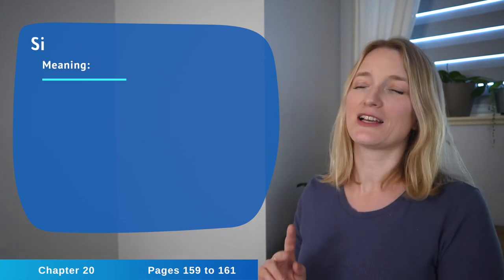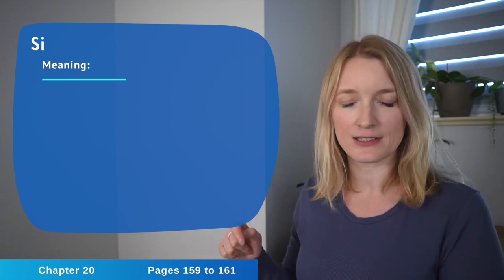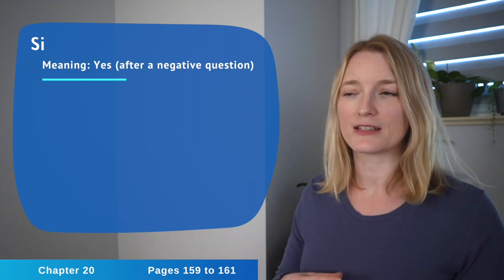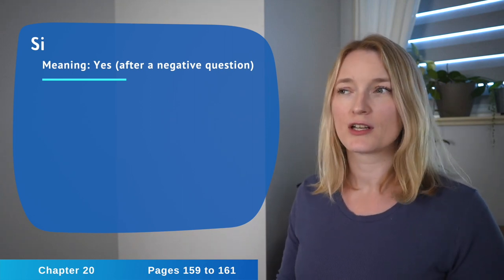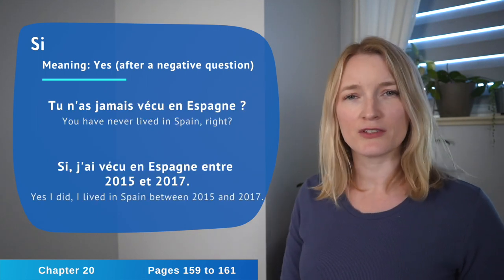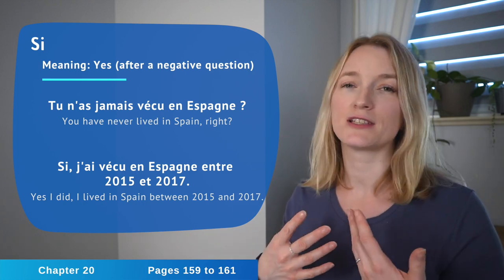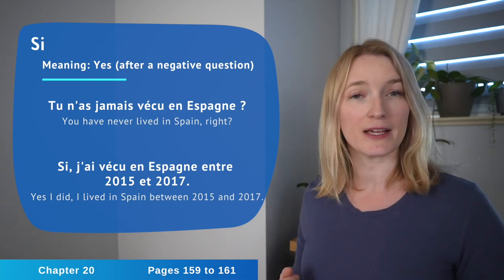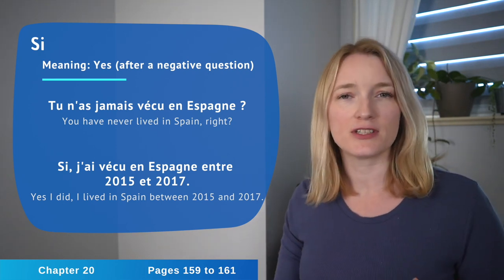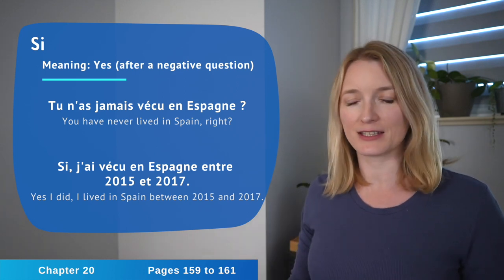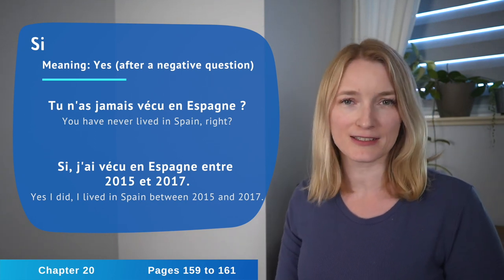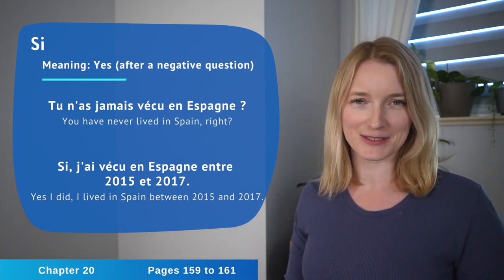Then we have si. I have a long video about si. I can always link it in the description box. It means yes, but after a negative question. So to answer a negative question in a positive way, you're going to use si. Tu n'as jamais vécu en Espagne? So the person thinks that you have never lived in Spain. But you did live in Spain. So you answer si, j'ai vécu en Espagne entre 2015 et 2017.